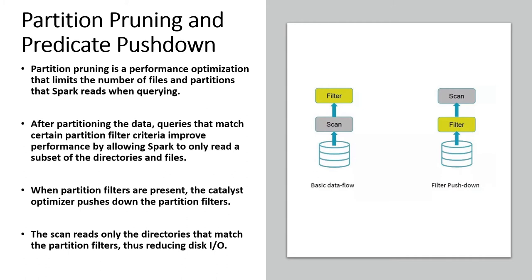Let's see how it happens in the normal data flow. If you're trying to do some filtering — using a WHERE clause or a filter clause — the Spark engine will first read all the data corresponding to the dataframe or table on which you're applying the filter. Then, out of all those records already brought into memory, it will filter and find the records matching the condition. This brings in the entire dataset and then filters a subset.